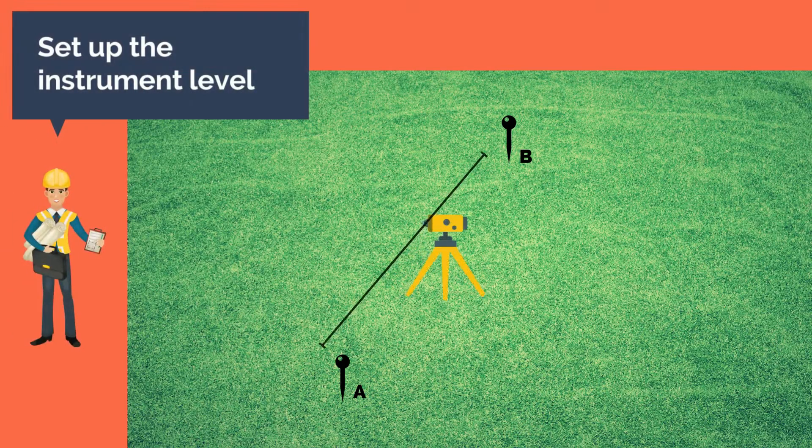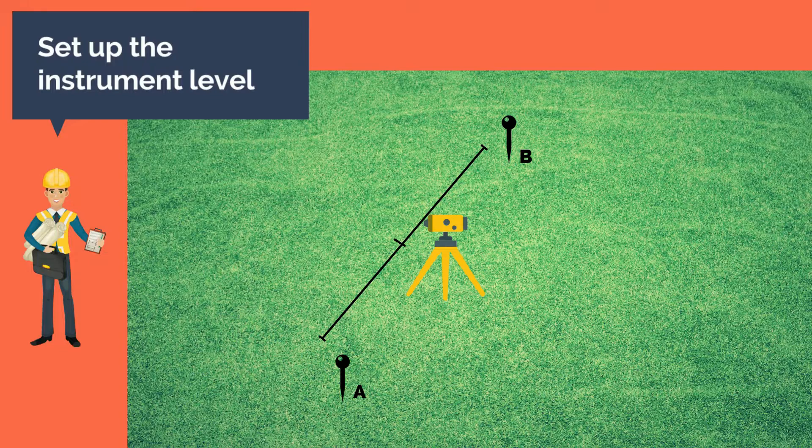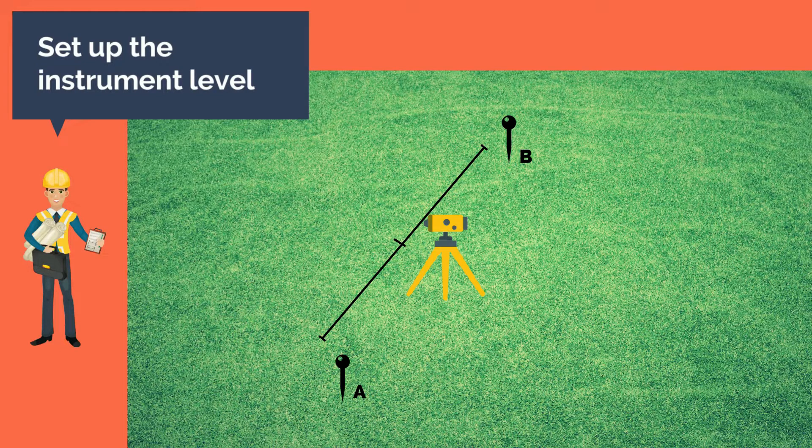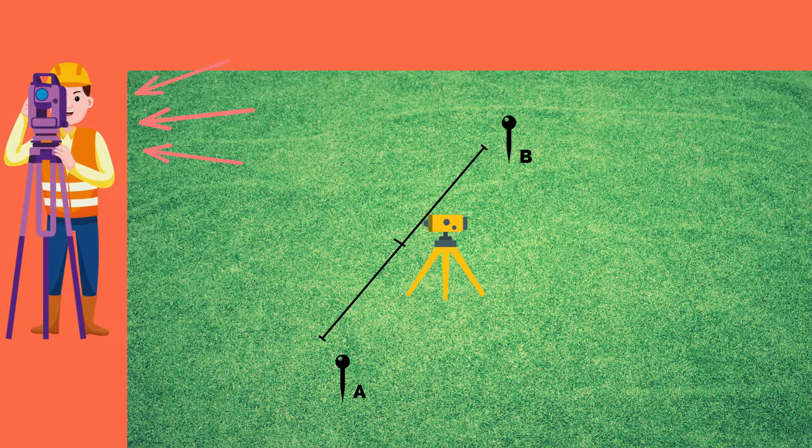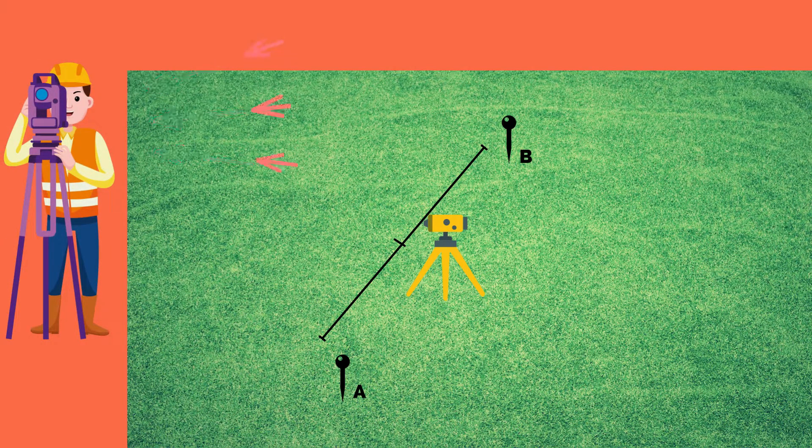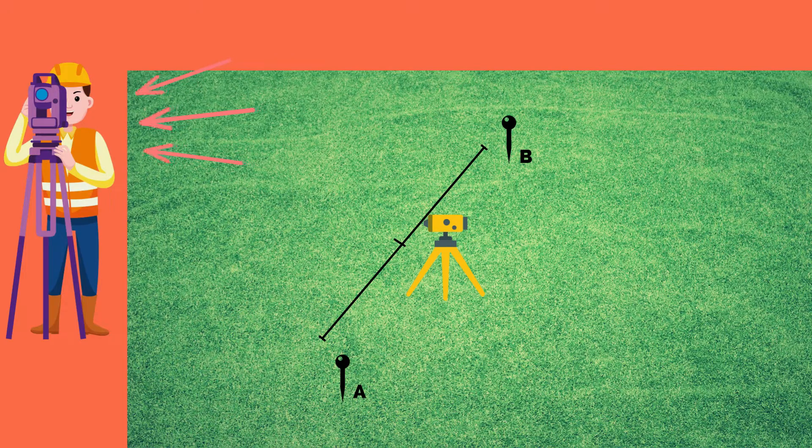Then, the students are to set up the instrument level on the suitable points, preferably about midpoint of the two designated stations A and B by driving the tripod firmly on the ground. Adjust the height of the instrument to the convenient level of the instrument man, preferably his eye level, through tripod leg locks.